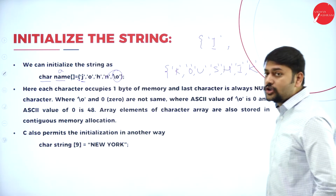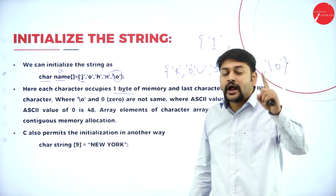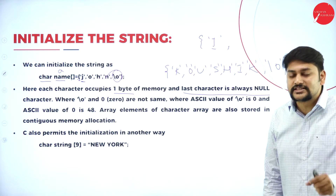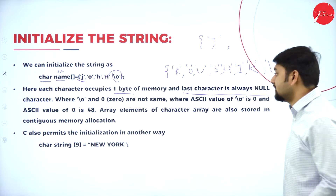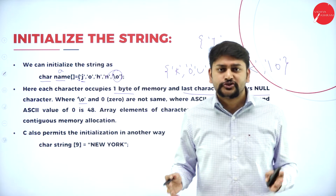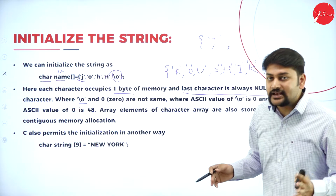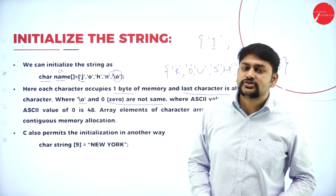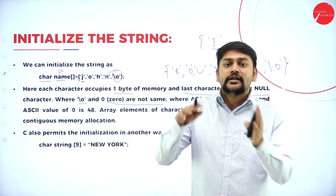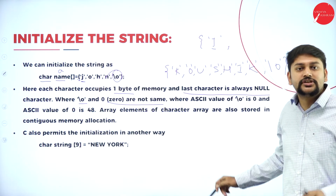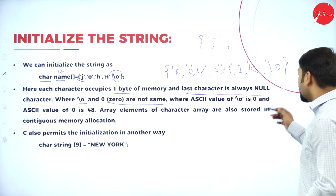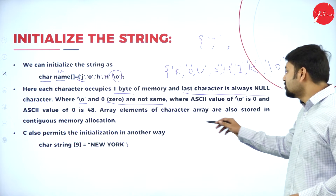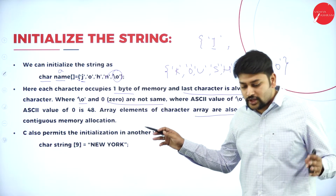Each character occupies one byte of memory. The last character is always a null character (\0). Now let's understand: slash zero and the digit zero are NOT the same. They are different because their ASCII values differ — the ASCII value of \0 is zero, while the ASCII value of the digit '0' is 48. The ASCII values are completely different.